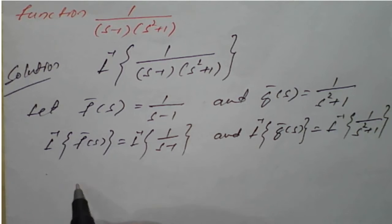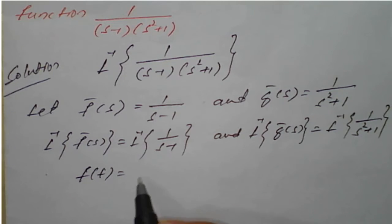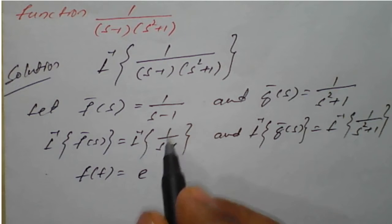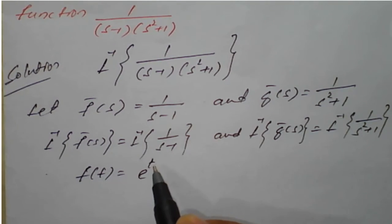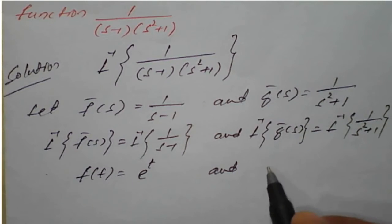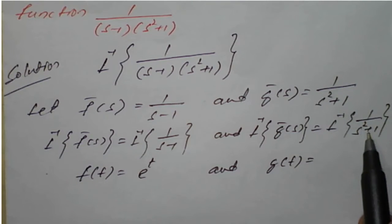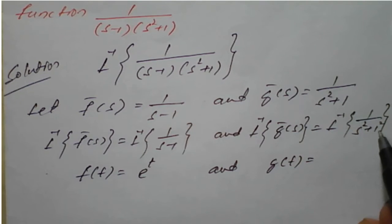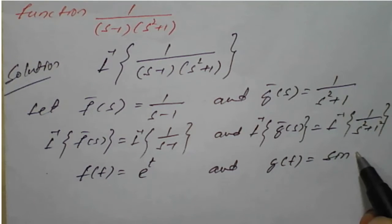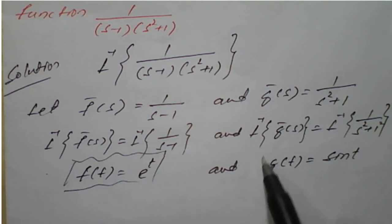Inverse Laplace of f'(s) is f(t), and inverse Laplace of 1 upon (s minus 1) is e raised to t. Next, inverse Laplace of g'(s) is g(t), equal to inverse Laplace of 1 upon (s squared plus 1). Treating 1 as 1 squared, since 1/(s² + a²) gives sin(at)/a with a=1, we get g(t) = sin(t).